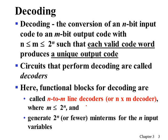We are going to study several functional blocks. The first one is a decoder. A decoder is a functional block which performs a decoding function. The size of the decoder is specified by two numbers: n, the number of inputs, and m, the number of outputs.